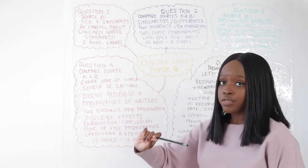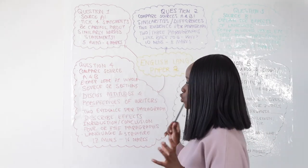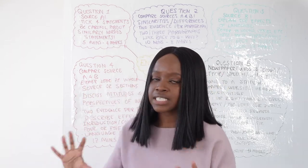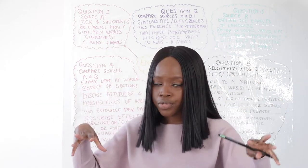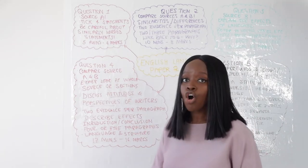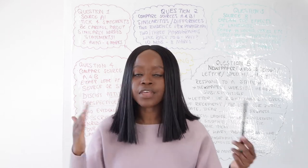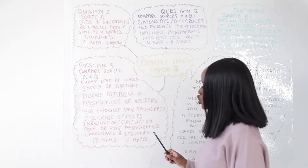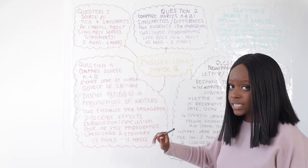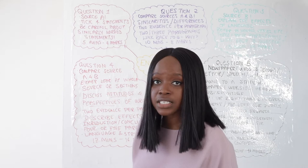Now let's look at question 4. For this question you are expected to compare both sources. It's a large question and you're either asked to look at the whole of source A and source B, or specific sections of either or both, and you are then expected to discuss the attitudes and perspectives of both writers. You are expected to compare both extracts consistently throughout the entire essay, including two pieces of evidence per paragraph and describing the effects.